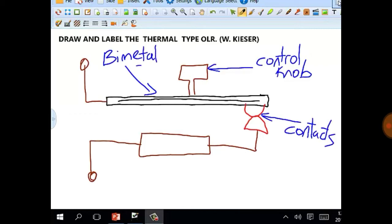And then we've got the heating element, where the current runs through and provides heat to the bimetal strip.